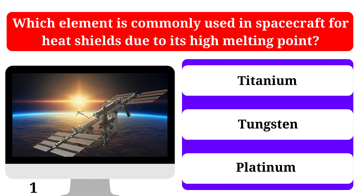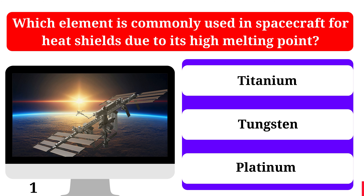Which element is commonly used in spacecraft for heat shields due to its high melting point? Titanium, Tungsten, or Platinum. The correct answer is Tungsten.